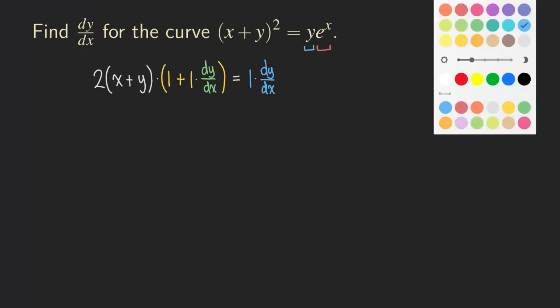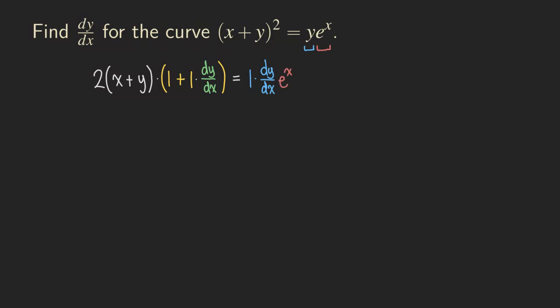For the second term of the product rule, the second function is untouched — I just copy it down, so do not differentiate it. Then continuing with the second term of the product rule, I write down the first function y untouched, and then I differentiate the second function. When I differentiate e to the x, I get e to the x — it's the same function, so I just write down e to the x.